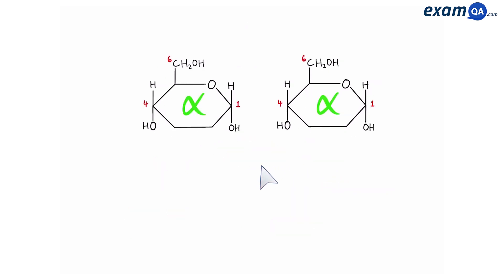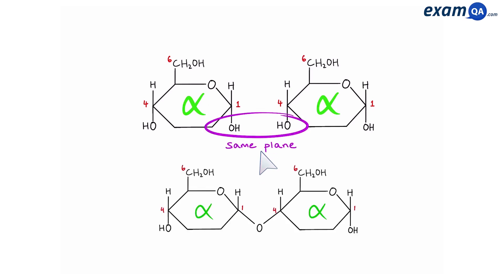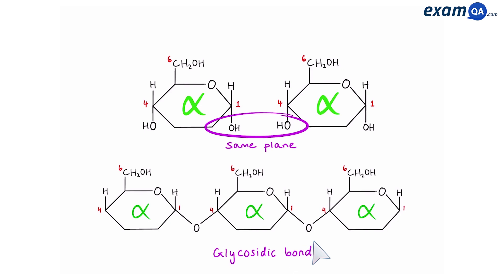Now we already saw that in alpha glucose, both the OH groups are in the same plane. That means that they can join together like this and create a glycosidic bond. And this allows it to extend even further and form polymers such as amylose, amylopectin and glycogen.